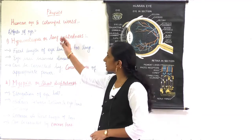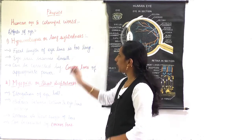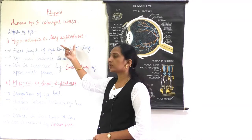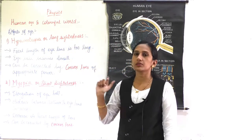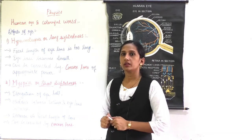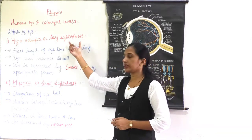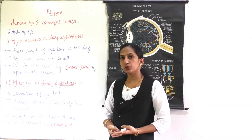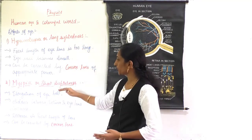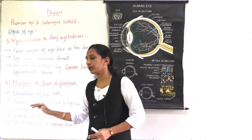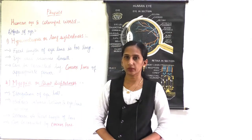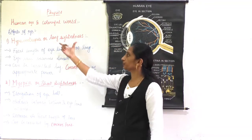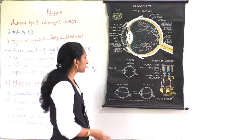The first defect is hypermetropia, also called long-sightedness. This is very important — a question can be asked: 'Long-sightedness is also called as dash.' Many students get confused between myopia and hypermetropia, so don't get confused. Long-sightedness is hypermetropia.